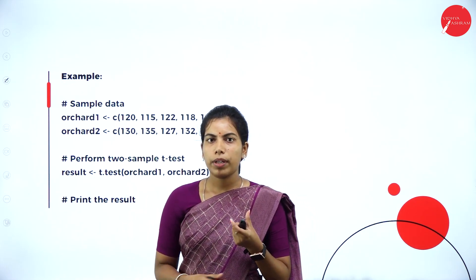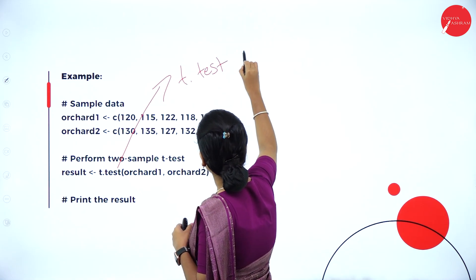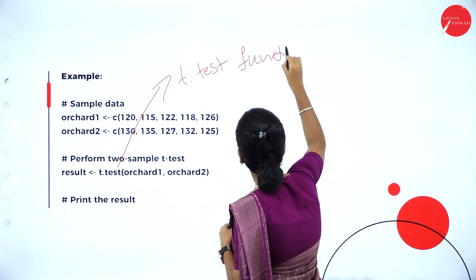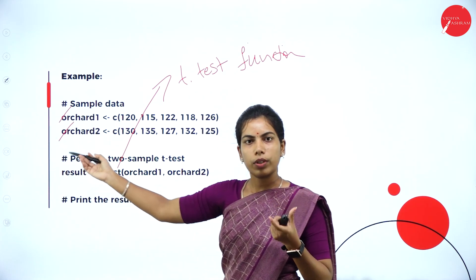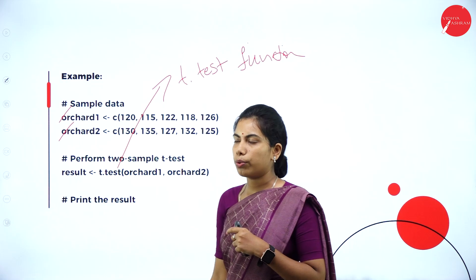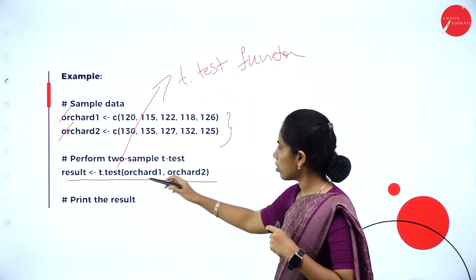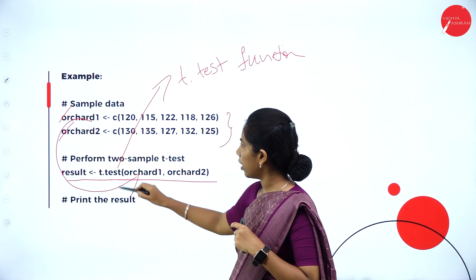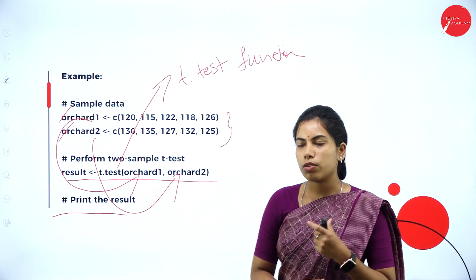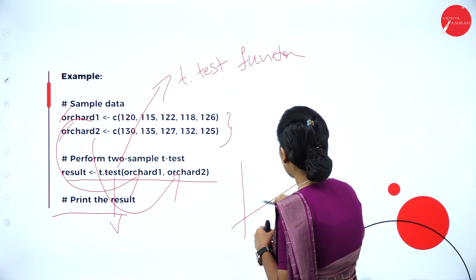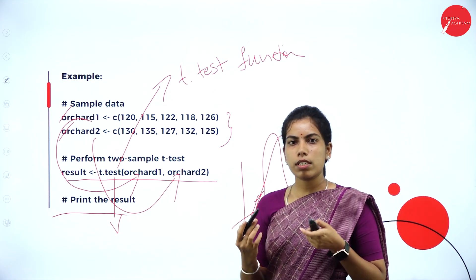Next, let's see an example of how the hypothesis test works. We call the T.test function — which is mainly used for probability or prediction purposes. Consider two populations: orchard 1 and orchard 2, each having samples of data with some numbers. We call orchard 1 and orchard 2, and when printing the result it will generate output using T.test. The graph will be connected as previously described.